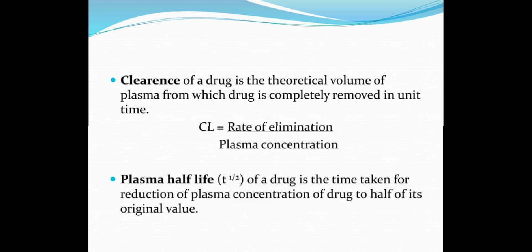Clearance of a drug is the theoretical volume of plasma from which the drug is completely removed in unit time. It is expressed as: CL = rate of elimination / plasma drug concentration. Plasma half-life (t½) of a drug is the time taken for reduction of plasma concentration of the drug to half of its original value.